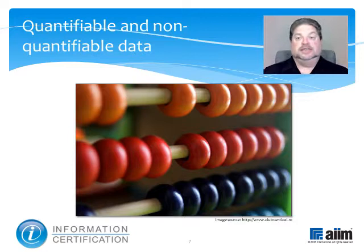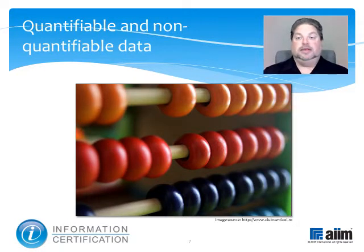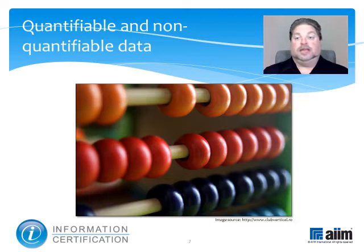Numeric targets can be set for these types of benefits to measure whether they're being delivered or not. For example, a metric can be set for the availability of information, and targets could be set at a departmental level to measure the number of lost documents or the number of times problems occurred when finding, retrieving, or sharing records.